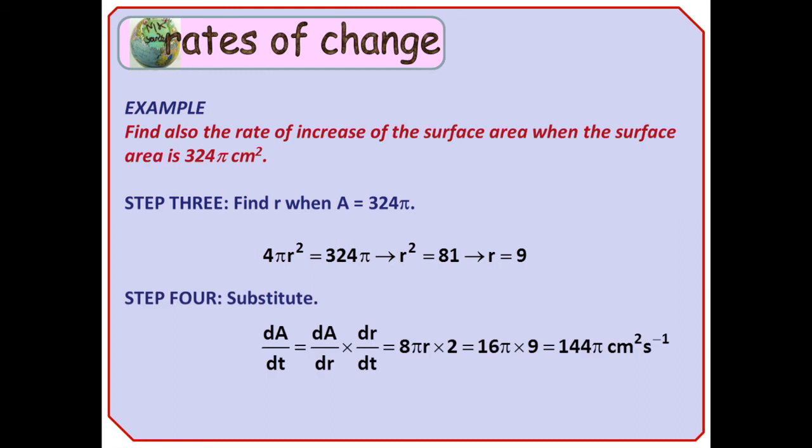Step 4, as before, substitute. And this time we've got 8 pi r times 2, or 16 pi r, and an undisputable answer of 144 pi.